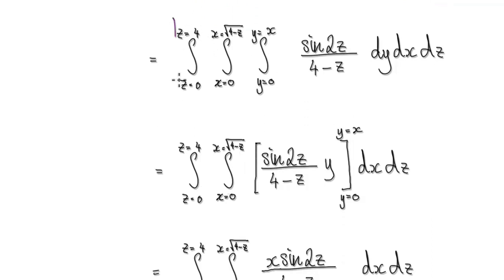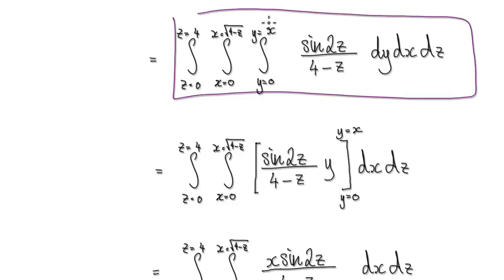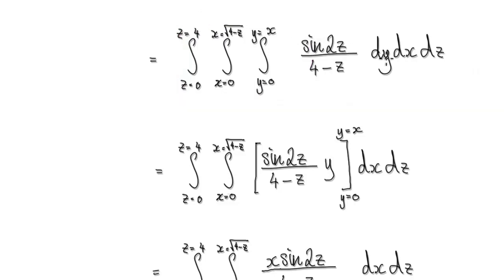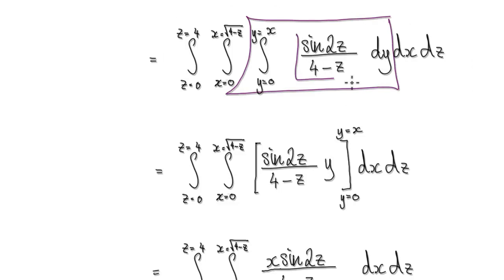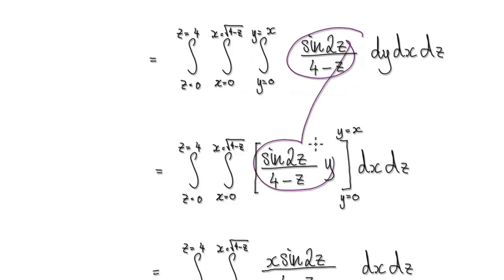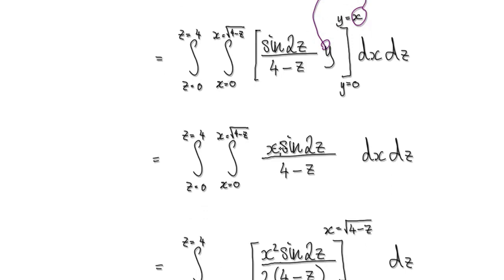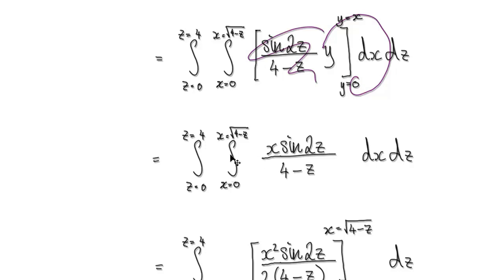Now we've done the hard part — we've changed the order of integration, and the region becomes this. Now it's just a matter of integrating. When you integrate with respect to y, this whole thing is a constant — it doesn't contain y. So when you integrate it, it will simply be the constant times y, evaluated from 0 to x. Putting x into y gives you the expression multiplied at the top, and putting 0 into y makes the whole thing disappear. So it will take us to the next expression.